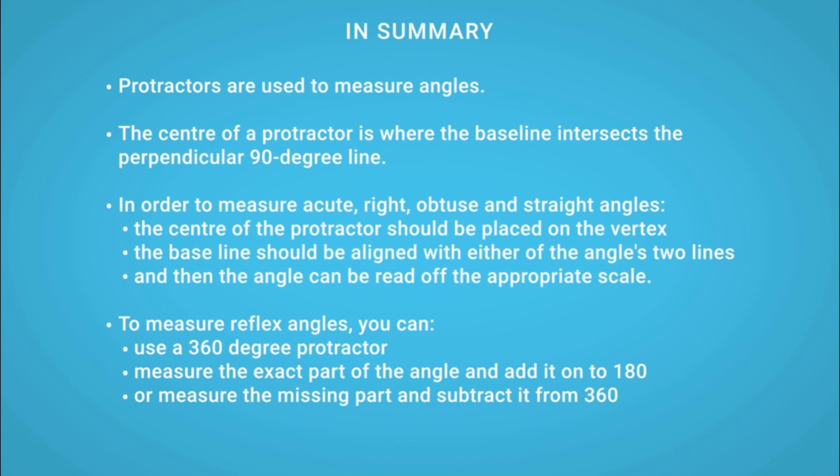To measure reflex angles, you can use a 360 degree protractor, measure the exact part of the angle and add it to 180, or measure the missing part and subtract it from 360.